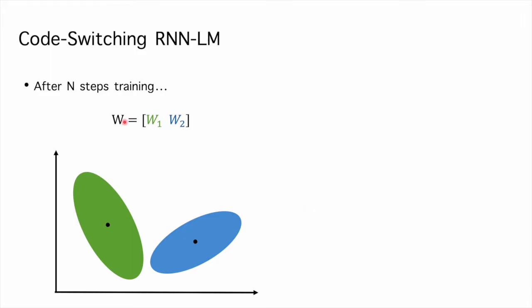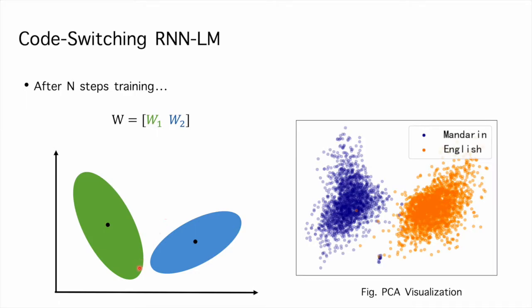After n-step training, the distributions have arbitrary shapes based on their language characteristics. However, without seeing bilingual word pairs, the word distributions may converge into their own shape without correlating to each other. And we showed the practical distribution with PCA visualization here.